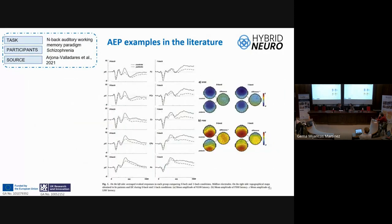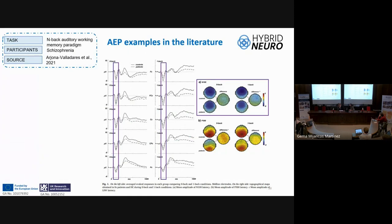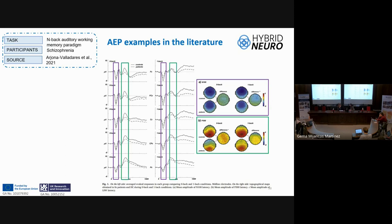One result was that N100 amplitude increased from zero-back to one-back condition and was significantly larger in healthy controls compared to schizophrenia patients, supporting that higher attentional load increases N100 amplitude. Regarding P300, a reduced amplitude was obtained in schizophrenia during the zero-back condition, probably reflecting the attentional and working memory impairments of that population.